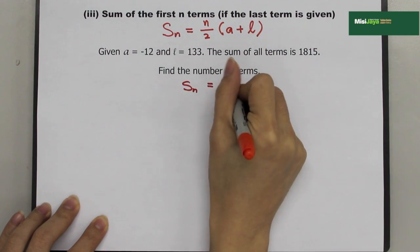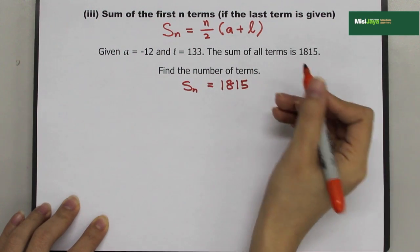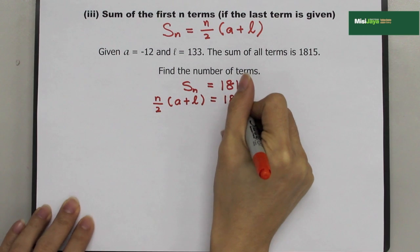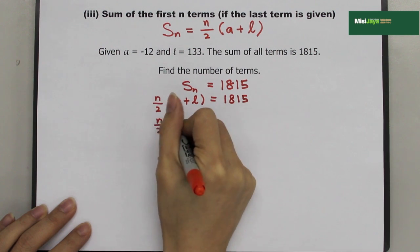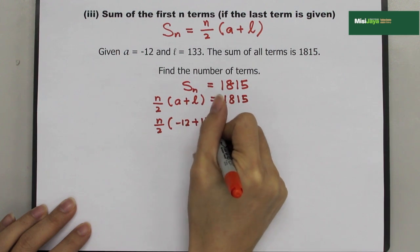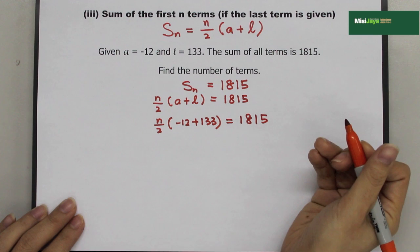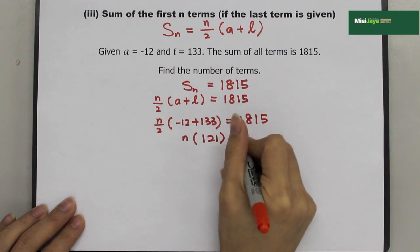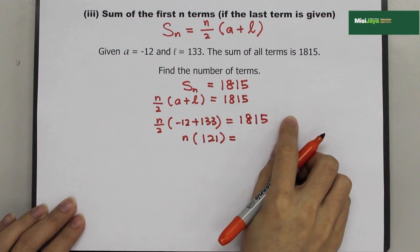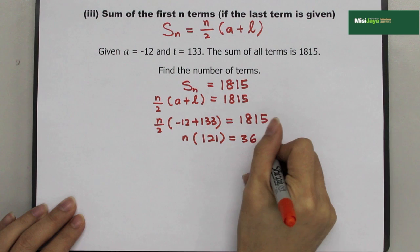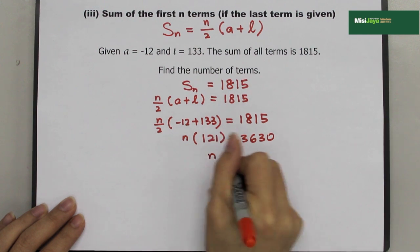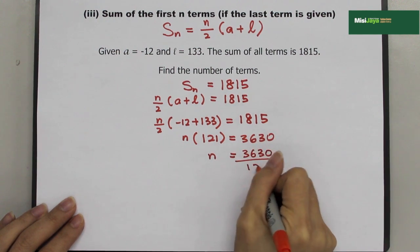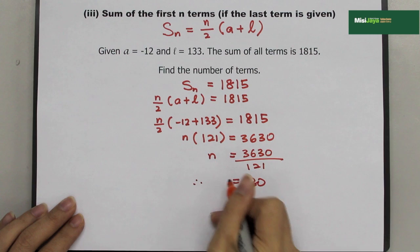Starting with SN equals 1815, I substitute the formula: N over 2 times bracket A plus L equals 1815. So N over 2 times bracket negative 12 plus 133 equals 1815. The bracket value is 121. Moving 2 to the right gives 3630. Dividing by 121 gives N equals 30.